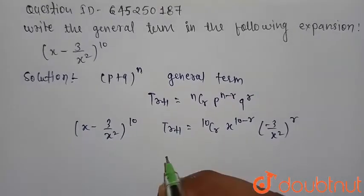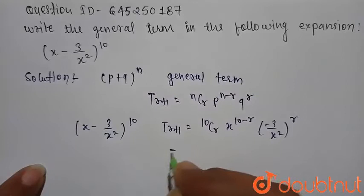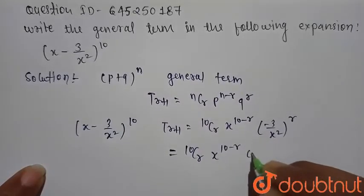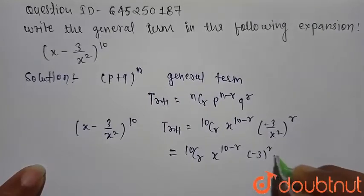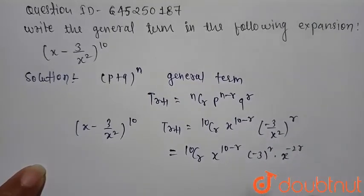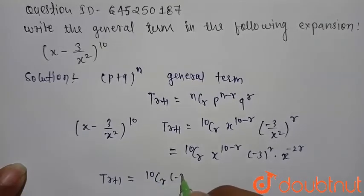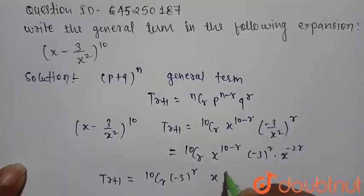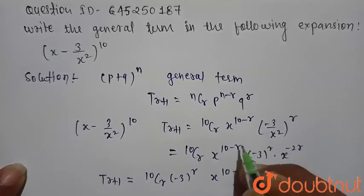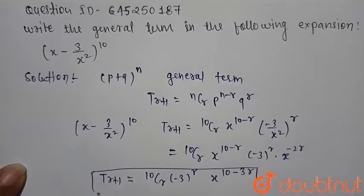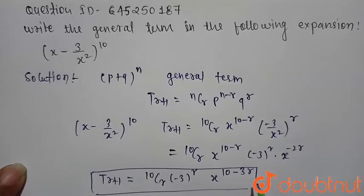Solving these, we get 10Cr times x raised to power (10 minus r) and (minus 3) raised to power r, and x squared becomes x raised to power (minus 2r). So T(r+1) equals 10Cr times (minus 3) raised to power r and x raised to power (10 minus r minus 2r), that is 10 minus 3r. Therefore the general term is 10Cr times (minus 3) raised to power r times x raised to power (10 minus 3r).